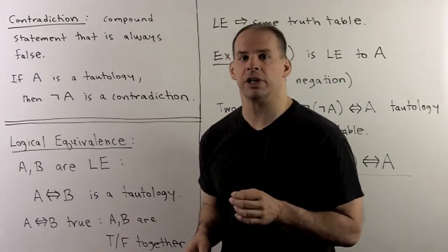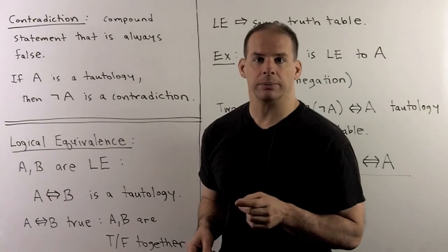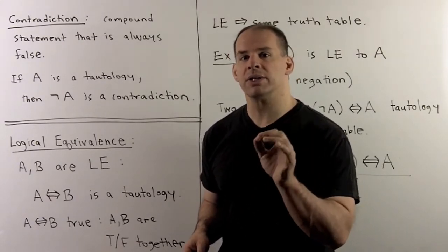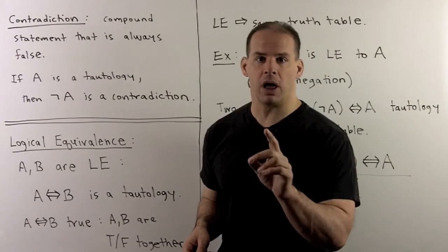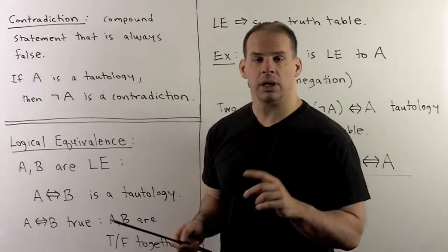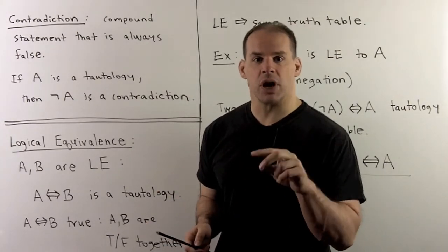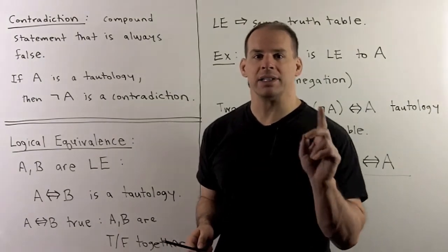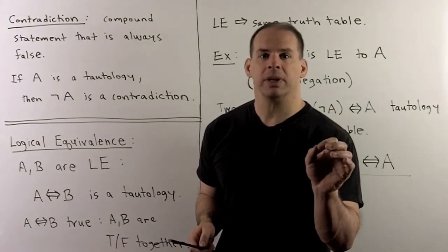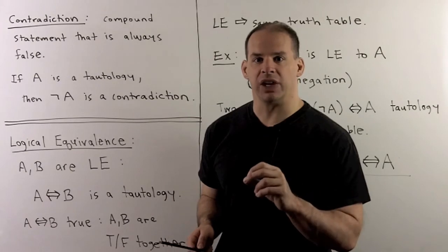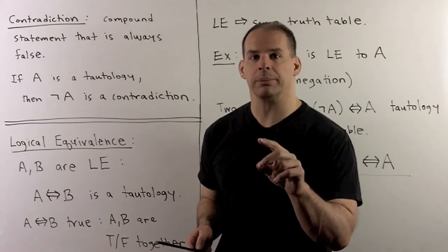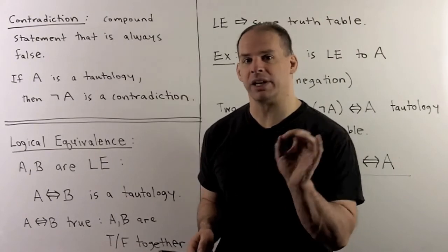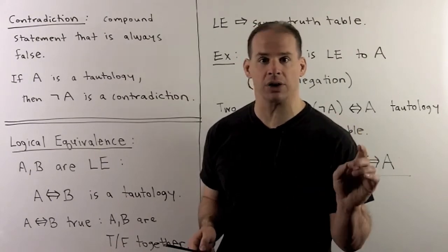For another construction, we have contradiction. A compound statement is a contradiction if all of its values are false. This is the opposite of a tautology. So if I want to construct a contradiction, I can take any tautology and take its negation, and we get a contradiction. That works in the other direction too — the negation of any contradiction gives us a tautology.